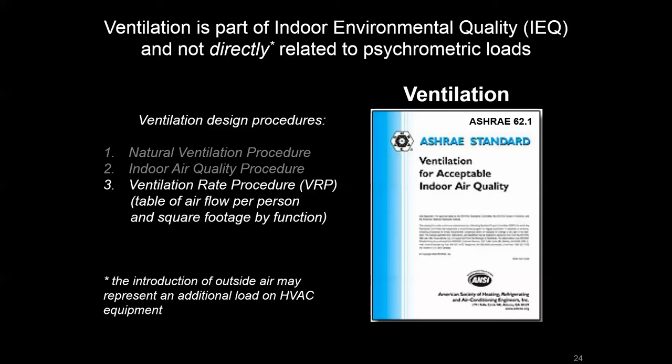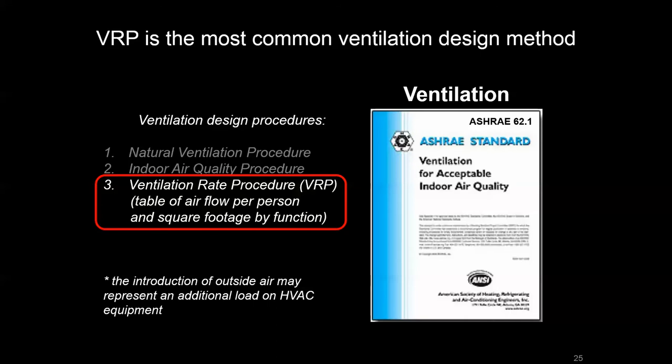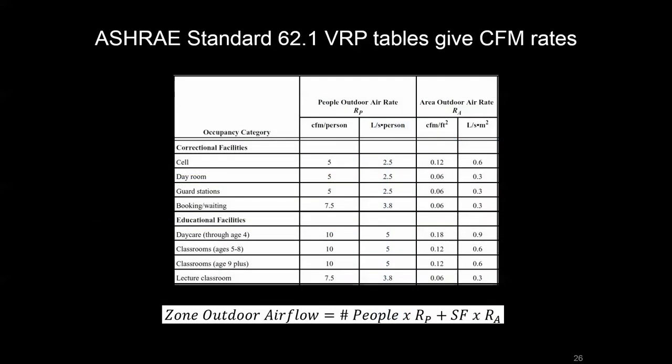The VRP is a more basic way of determining ventilation requirements based on space type, space size, and occupancy. It's really the powerhouse for ventilation design and can be used for quick checks to understand if a zone is under- or over-ventilated. Here's an excerpt from ASHRAE 62.1 — there are a number of space types listed with CFM per person and CFM per square foot factors. You apply those factors to the number of people and square footage in your space to get your zone outdoor airflow, then back into the percentage of outdoor versus recirculated air at your economizer.